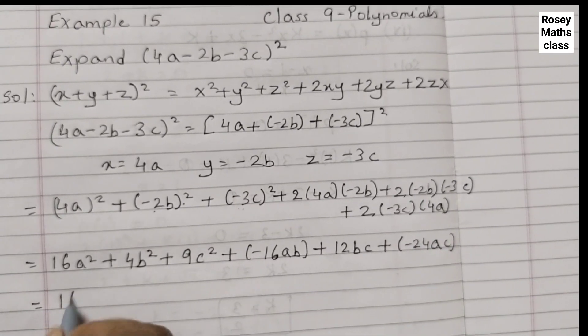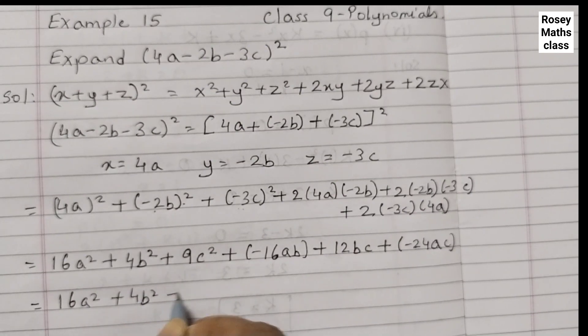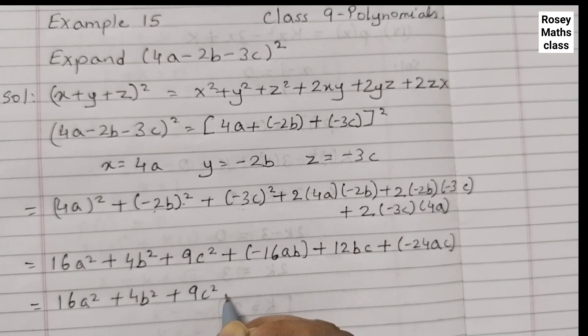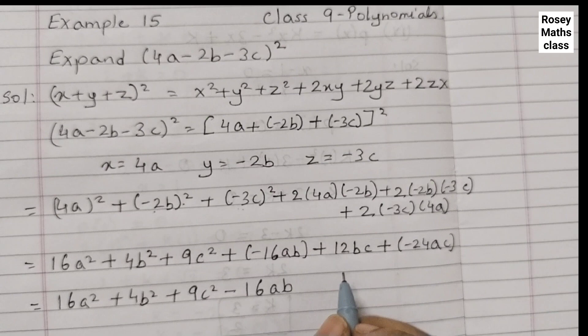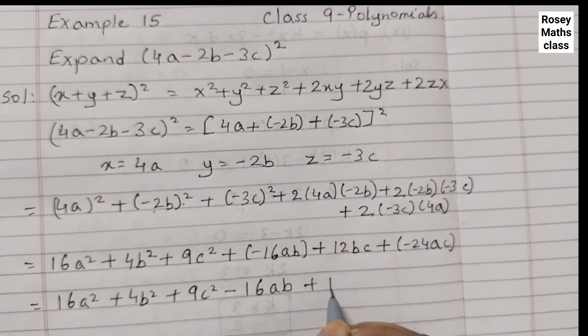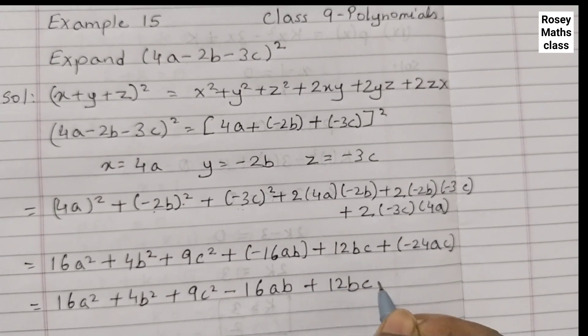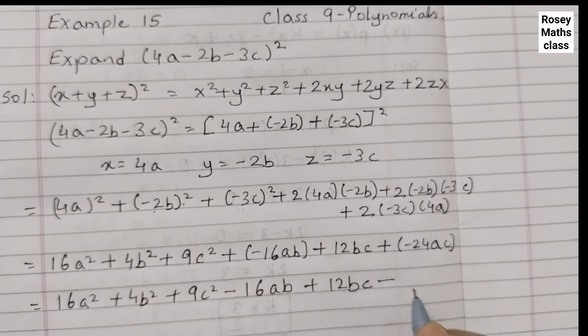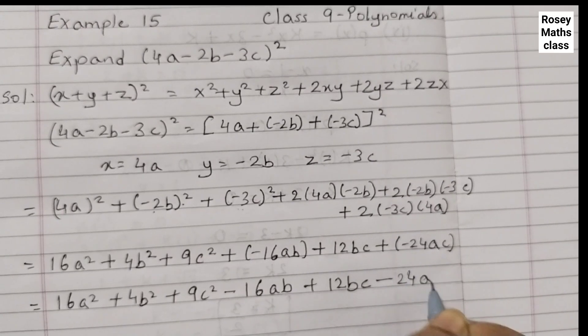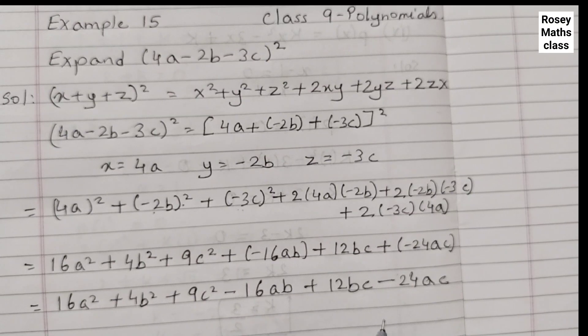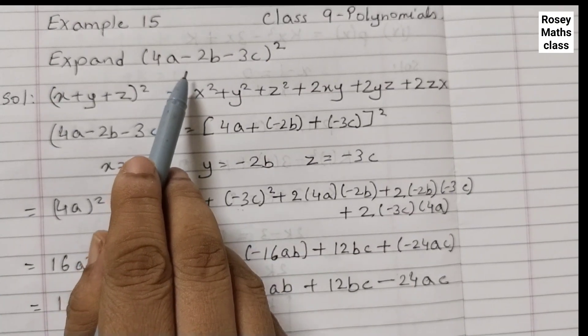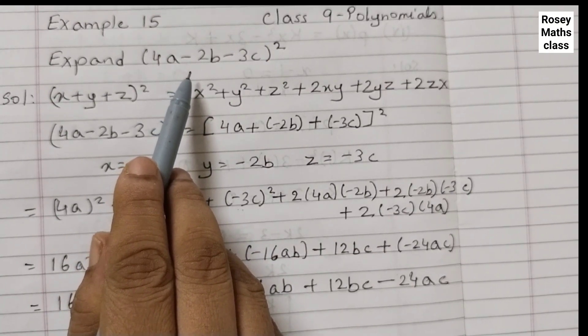And the last step. 16a squared plus 4b squared plus 9c squared plus minus becomes minus 16ab plus 12bc minus plus minus is minus 24ac. And this is the expanded form of this given expression. Thank you.